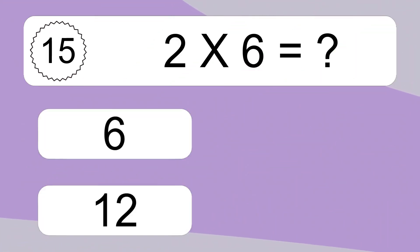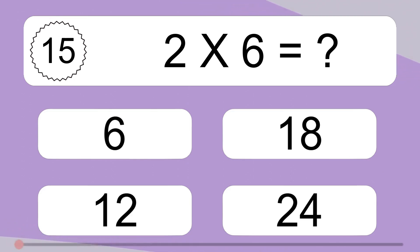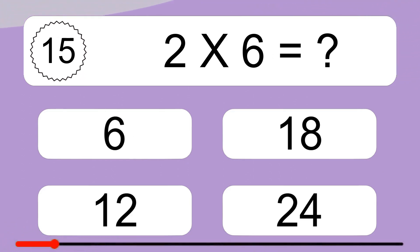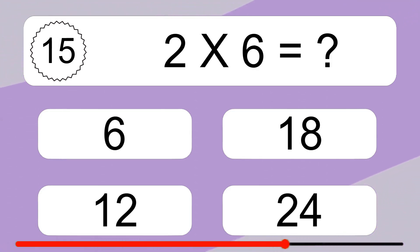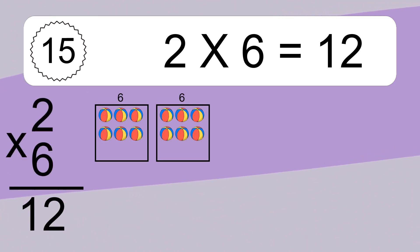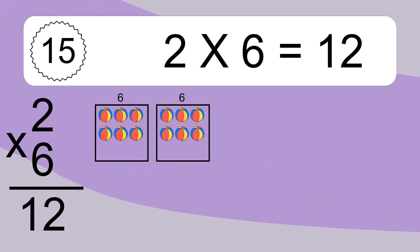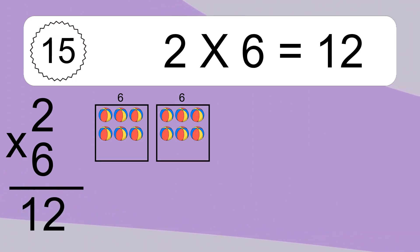2 x 9 equals what? 2 x 6 equals 12. We have 2 boxes and each box has 6 colorful balls inside. If you count all the balls in all the boxes together, you will have 2 x 6 balls. This equals 12 balls.